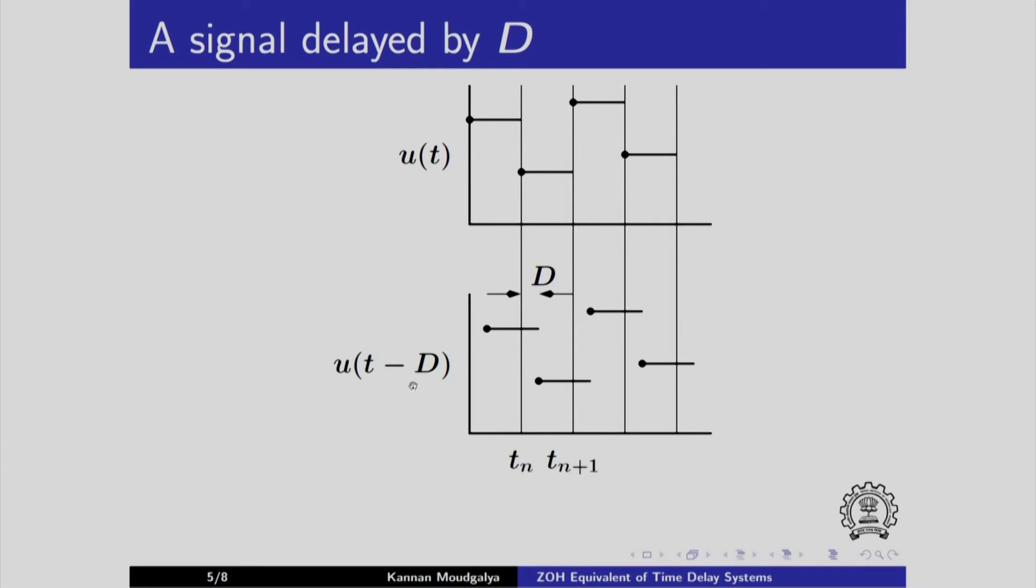Once it is delayed by d, it gets shifted to the right by this amount d and we will work with this interval tn to tn plus 1. Over this interval tn to tn plus d, the value of u taken is this and this is nothing but the value that it had taken at this time instant. And this time instant is t of n minus 1, one time instant before we get this u of tn minus 1.